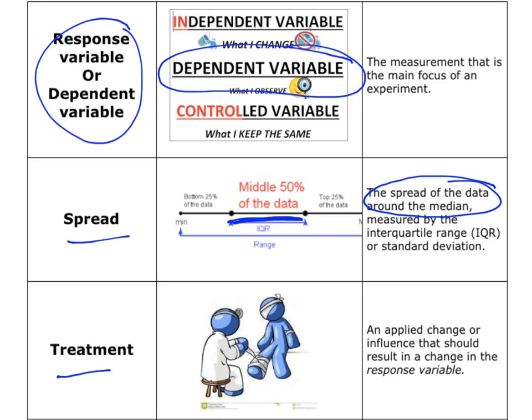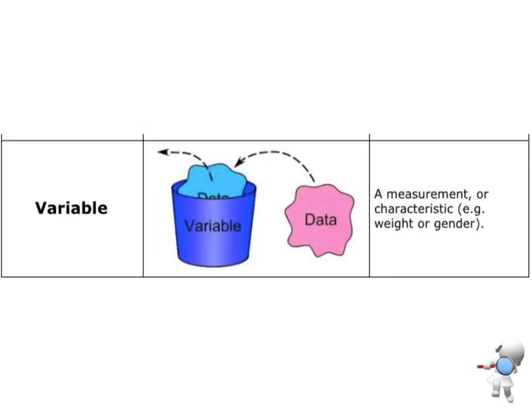A treatment is the thing that is being done to the person. As you can see in the little picture, the person is getting bandages applied — that is the treatment, that's what's being done to them. And last but not least, a variable. A variable is some kind of measurement or characteristic — I can measure people's heights, weights, and test marks, and count lots of different things. Those would be our variables.